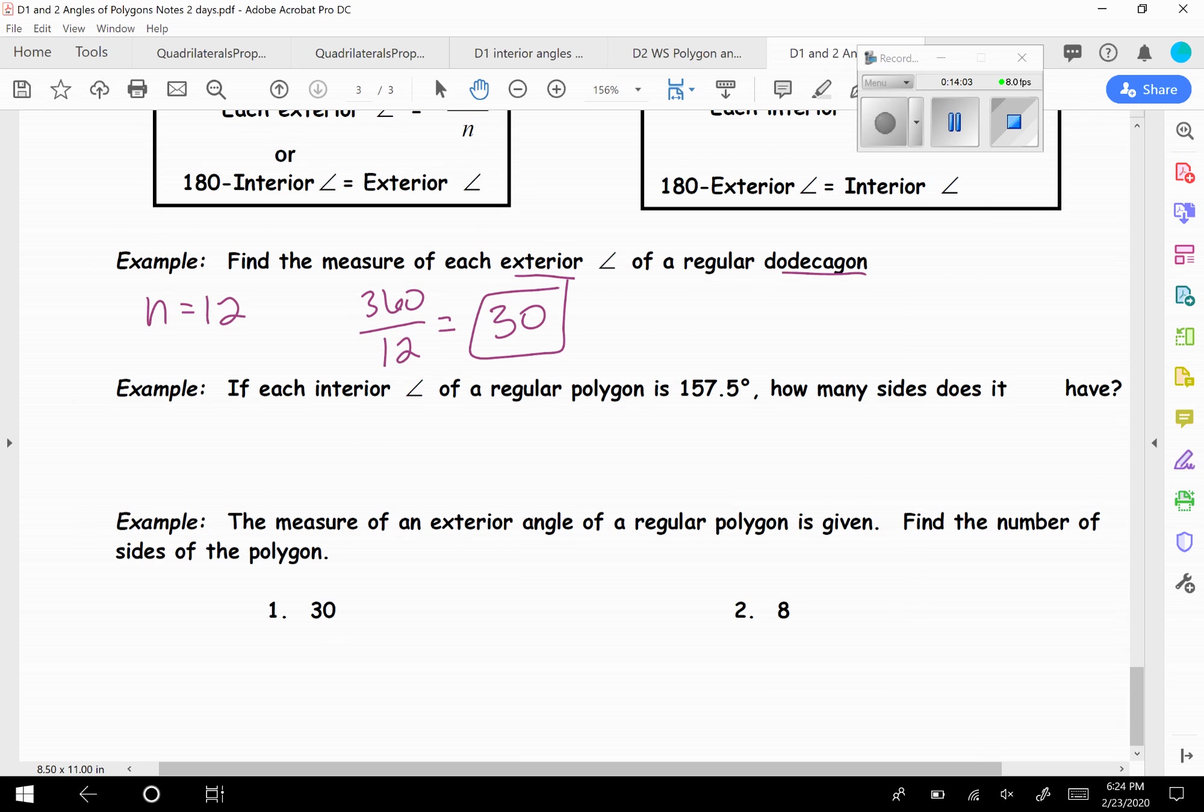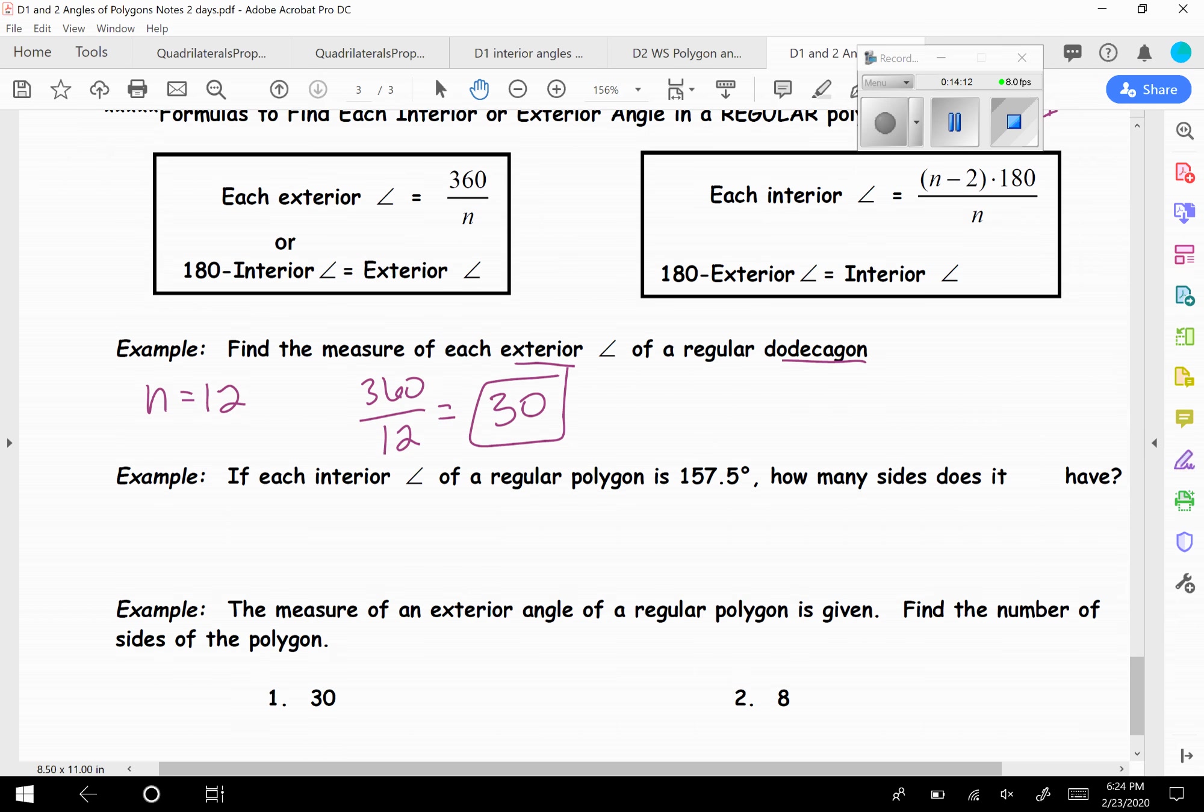Next one. If each interior angle of a regular polygon is 157.5 degrees, how many sides does it have? So they're telling us one interior polygon angle is 157.5. So now we're going to have to solve for N. So start over here to the left. So we have 157.5, that's one interior angle. So each interior angle is equal to N minus 2 times 180 divided by N. So now we're going to solve this for N. So first step is to get this N out of the bottom so we don't have a fraction anymore. So we're going to multiply both sides by N.